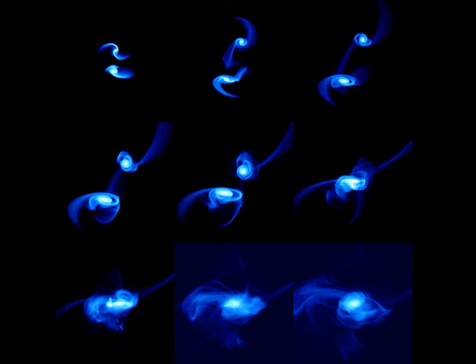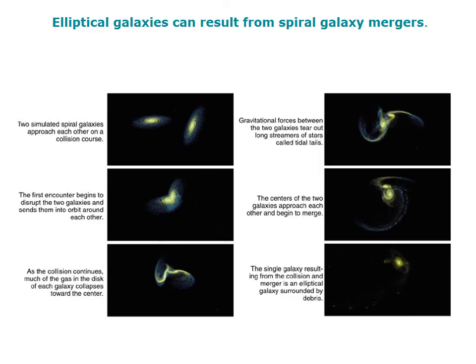Computer simulations of a collision between two similar-sized spiral galaxies show material getting kicked out and then forming a new object in the end. This raises an interesting point: galaxy collisions can, in principle, create spiral galaxies or take spiral galaxies and cause them to form elliptical galaxies — something we'll return to in the next lecture.